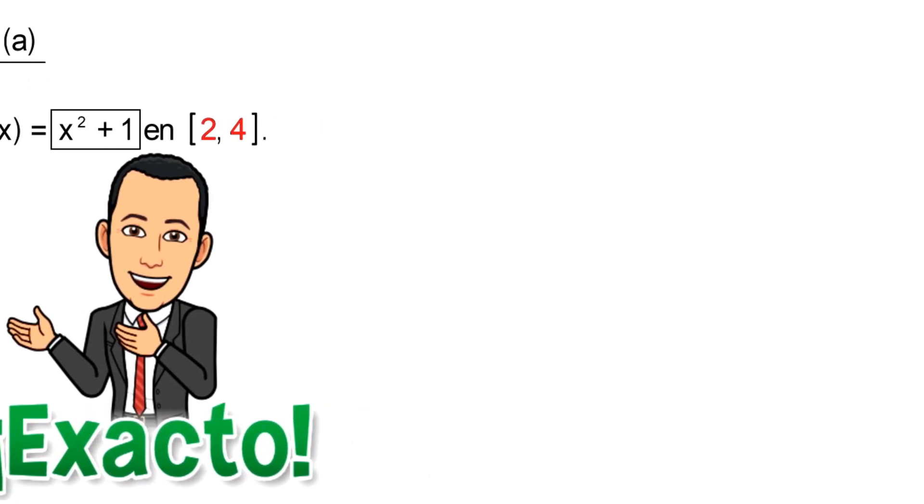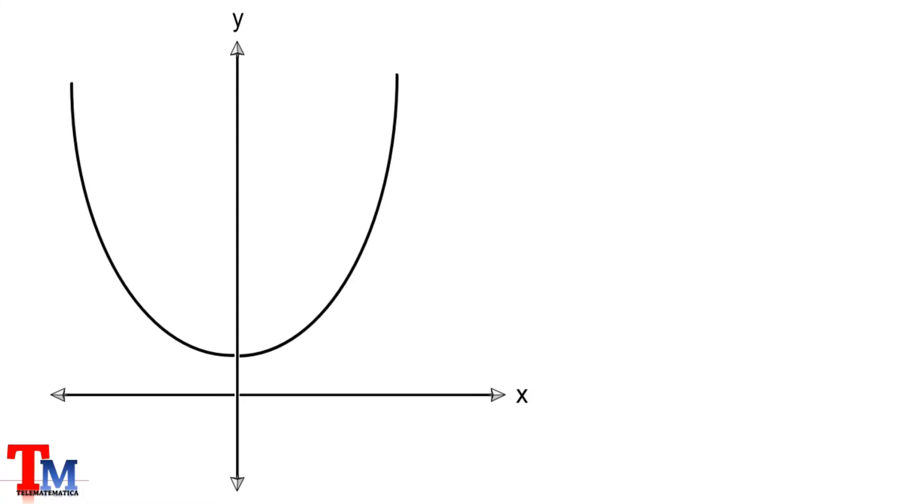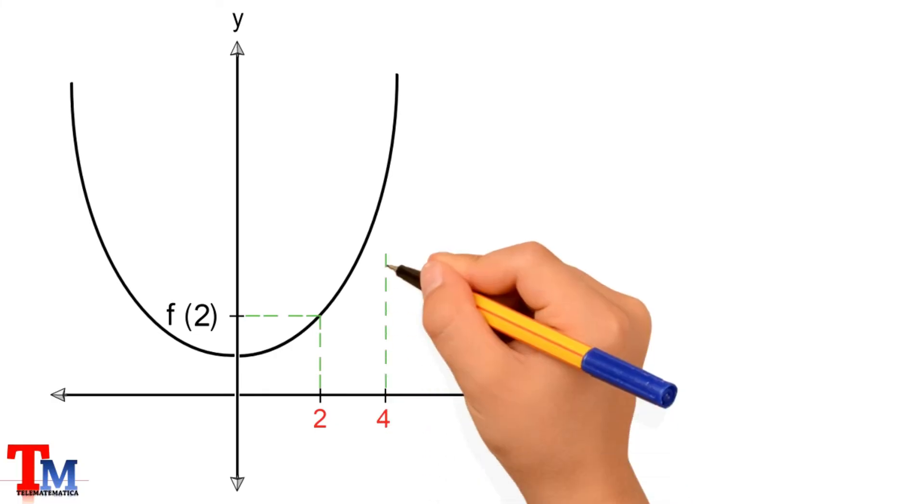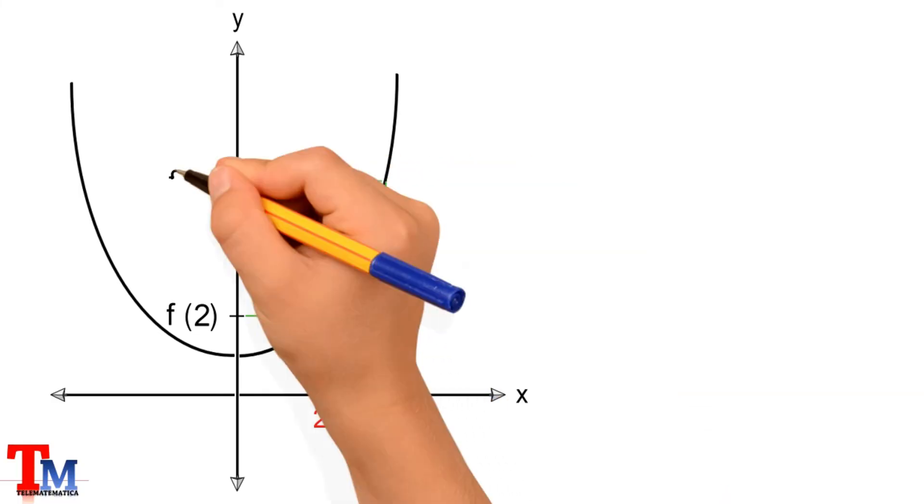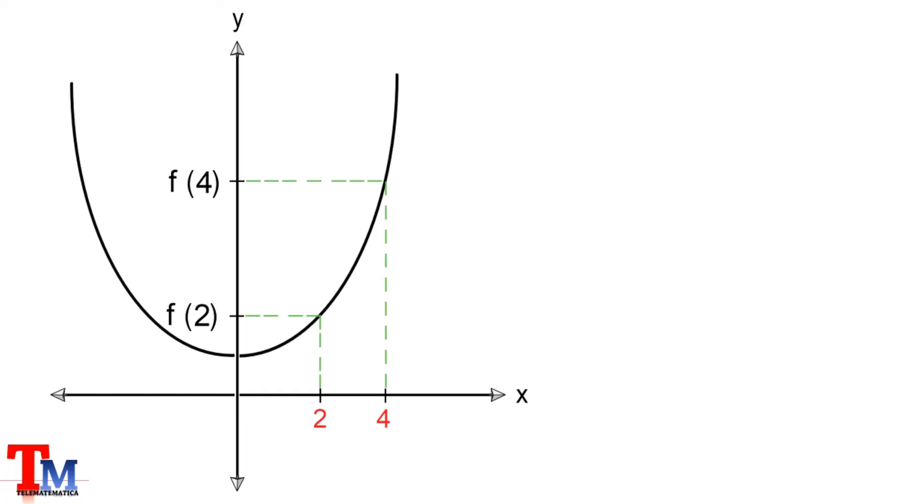Ahora bien, geométricamente, ¿este valor qué representa? Tenemos en primer lugar el gráfico de la parábola, donde representamos el valor 2 y su imagen f(2), y tenemos el valor 4 con su imagen f(4), las coordenadas de los puntos A y B respectivamente.